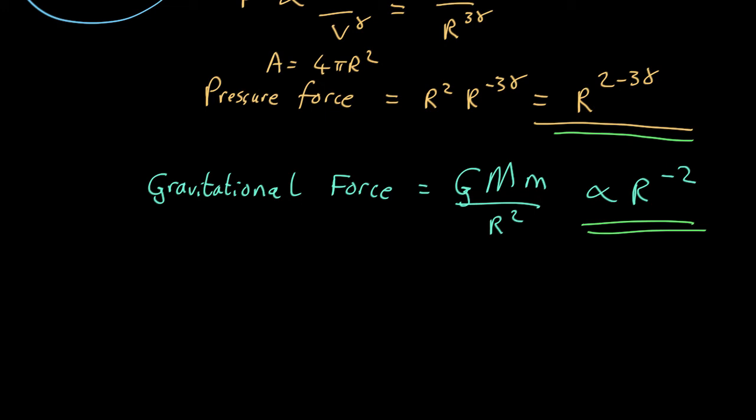So for stability, the edge of stability is going to be where this index equals that index. So minus 2 equals 2 minus 3 gamma. So let's rearrange that. So we'll move this over this side, so we get 3 gamma equals 4. So gamma equals 4 thirds. And that is the criteria for stability.